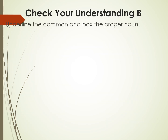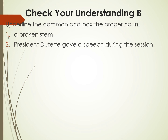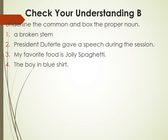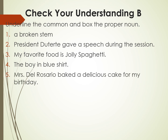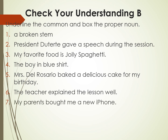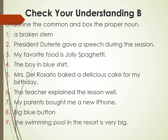In Check Your Understanding 2, you need to underline the common noun and box the proper noun. Number two: President Duterte gave a speech during the session. Number three: my favorite food is Jolly Spaghetti. Number five: Mrs. Del Rosario baked a delicious cake for my birthday. Number six: the teacher explained the lesson well. Number seven: my parents bought me a new iPhone. Number eight: big blue button. Number nine: the swimming pool in the resort is very big. Number ten: a tall building crumbled.